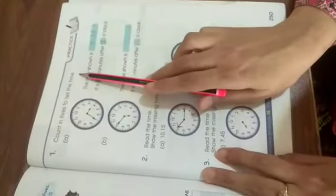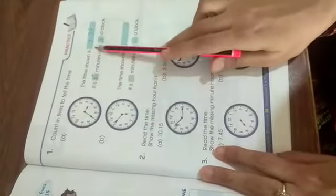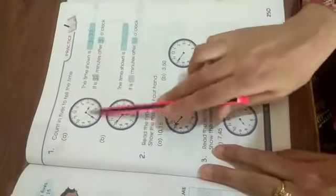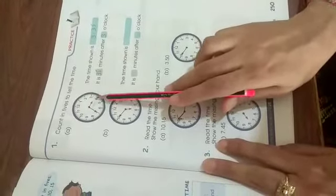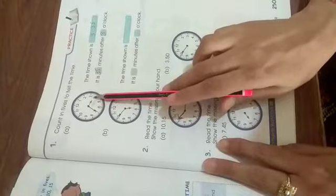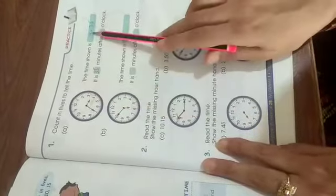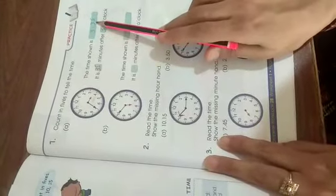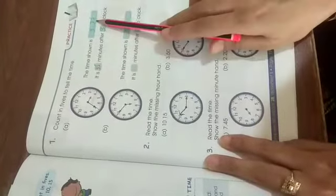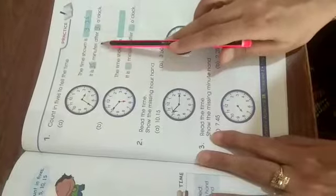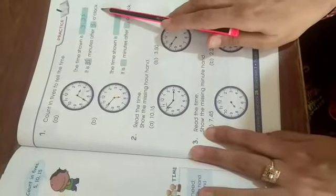Count in 5's to tell the time. The time shown is... now again you see the hour needle in between 3 and 4, not exactly 4. It means the hour hand is 3. So you will write it 3, then 2 dots, and then again you will count the table of 5, 7's are 35. So it is 35 minutes after 3 o'clock. In this way, you will do the B part by yourself.